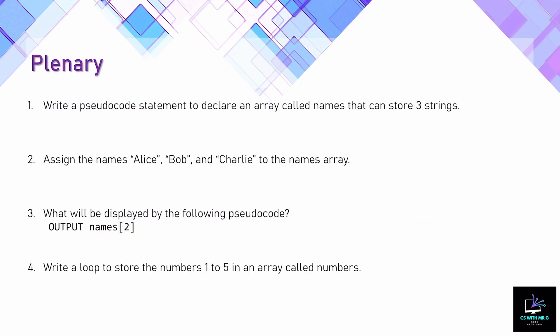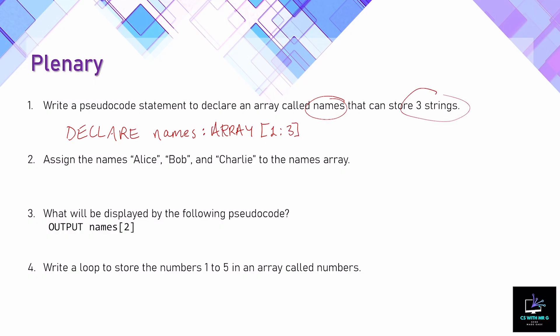Now let's put all of that into practice with some questions — give the video a pause and have a go yourself first. Question one: write a simple pseudocode statement to declare an array called 'names' that can store three strings. We use the word DECLARE, give the array a name — 'names' — use a colon, say it's going to be an ARRAY with positions one to three as it can store three strings, and then mention the data type: OF STRING. If it were numbers you would write OF INTEGER.